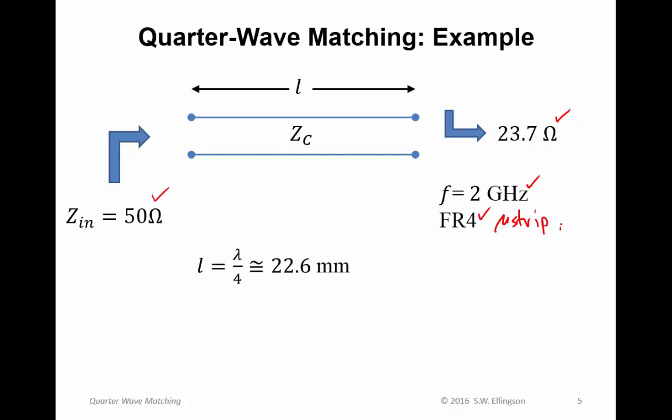The length is going to be 22.6 millimeters. I've worked out in a previous lecture what lambda is in FR4. And so you can go back and look at that material if you need a refresher on that. But you will find that the length here has to be 22.6 millimeters for this transmission line structure to be a quarter wavelength long at this frequency.